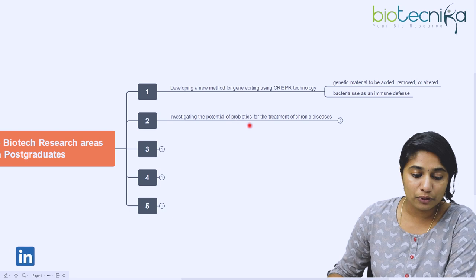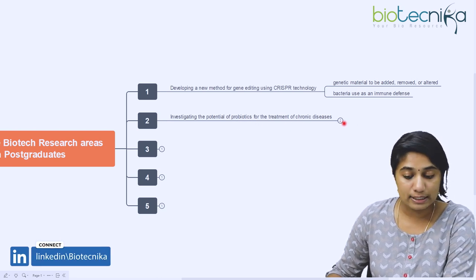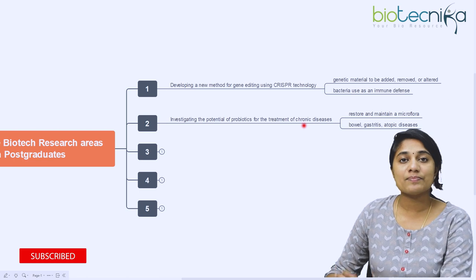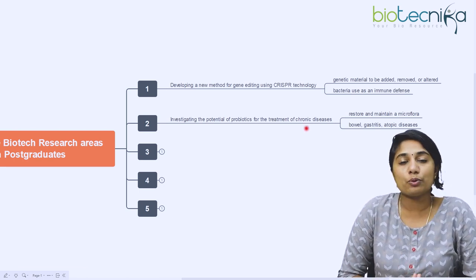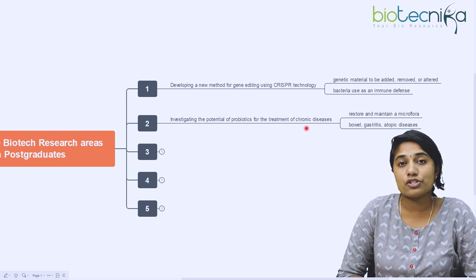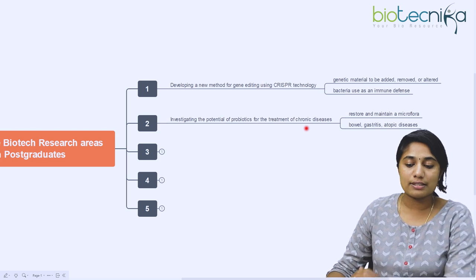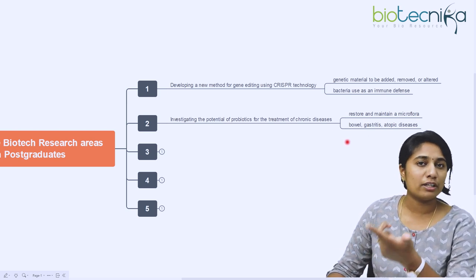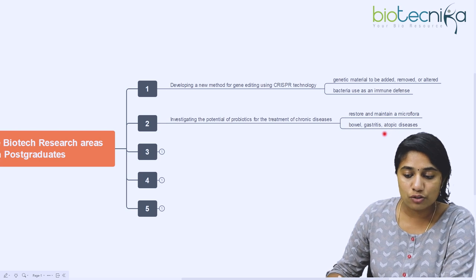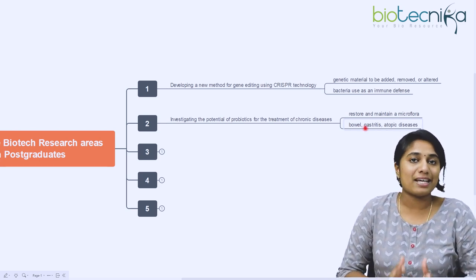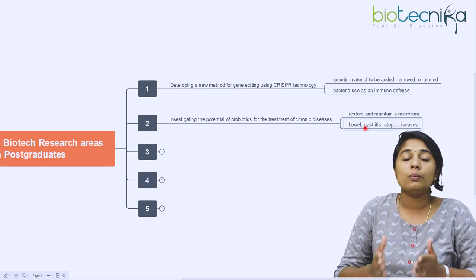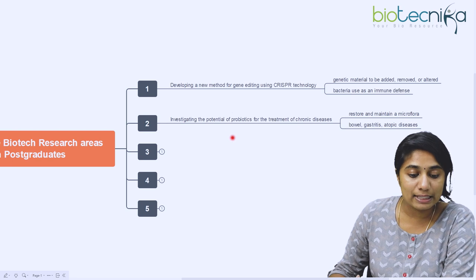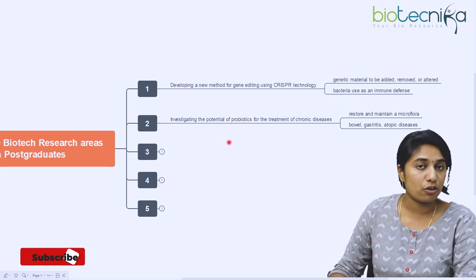The second is investigating the potential of probiotics for the treatment of chronic diseases. Probiotics are useful microflora or microorganisms present in our body. Researchers have confirmed that these probiotics play a very important nutritional role in curbing chronic diseases. Some chronic diseases that can be curbed using probiotics are bowel diseases like irritable or inflammatory bowel diseases, gastritis, or even atopic dermatitis. This research topic can help in investigating the potential probiotics for treatment of chronic diseases.